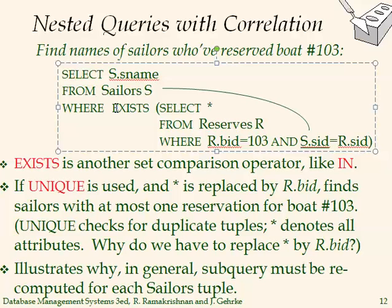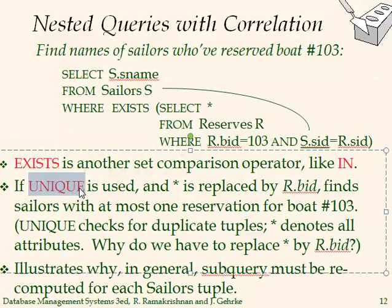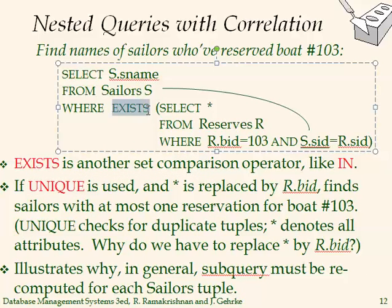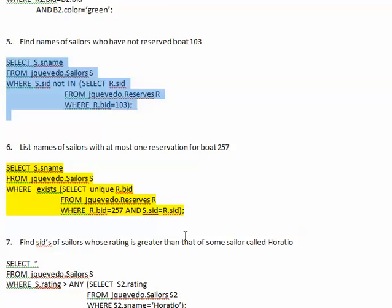There is something in the textbook that is not supported in Oracle: the UNIQUE operator. They suggest replacing EXISTS with UNIQUE, meaning the subquery returns only one row — at most one reservation. However, this is not how it will be implemented. I'm highlighting this in yellow because it is not actually answering what we want.